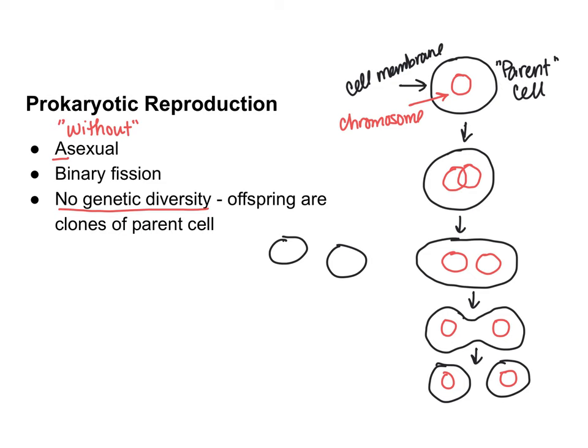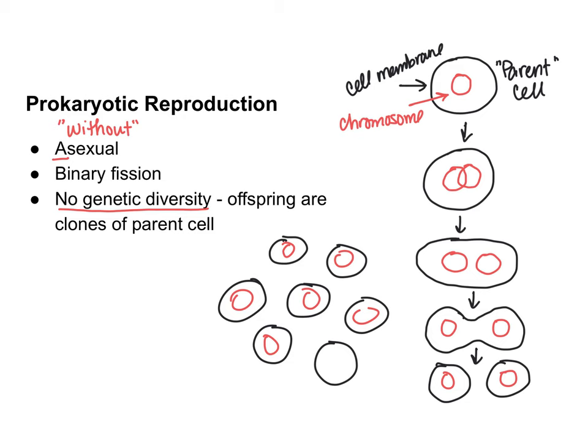So if this just keeps happening over and over, you're ultimately going to end up with a whole bunch of prokaryotes that are genetically identical to each other. Generally speaking, genetic diversity is good, so not having genetic diversity can be bad.